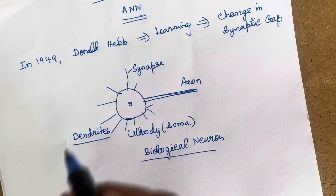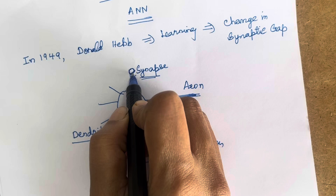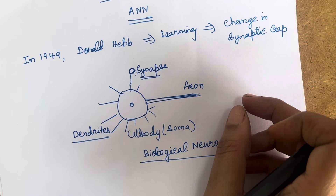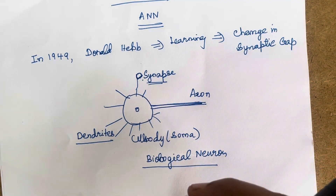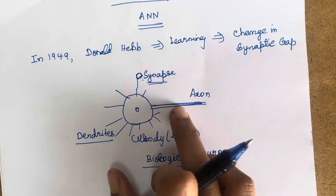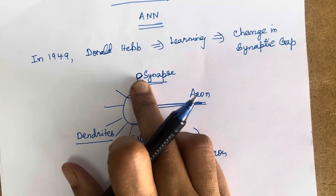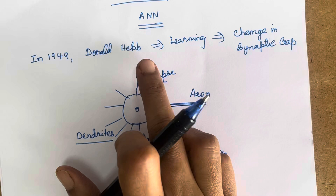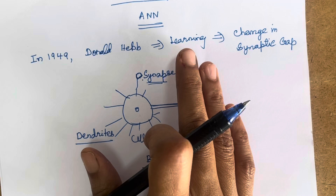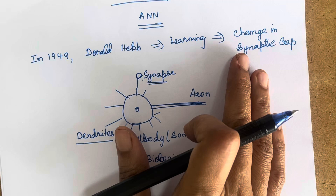At the end of the dendrites there is a small bulb-like organ called a synapse, through which a nearby neuron's axon will be connected. Whenever any learning has to take place or any electrical impulse has to be sent to the brain, the impulse is sent through the axon, then reaches the cell body, and through the dendrites reaches the synapse and goes to the next neuron, and likewise reaches the brain. Learning occurs only due to changes in the synaptic gap.